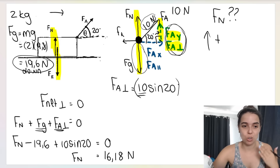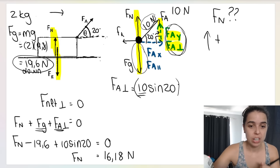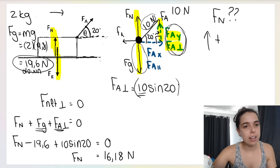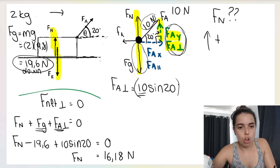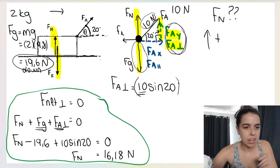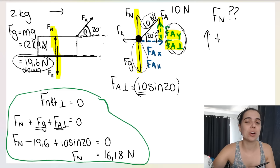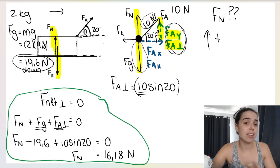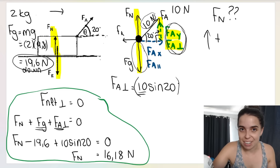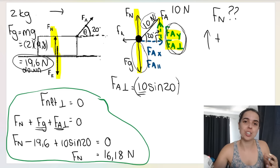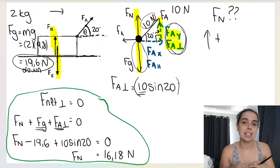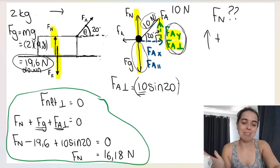What I'm showing in this scenario is that when there's another force acting at an angle, we break it into components. There's no longer just normal force and gravity acting in the Y direction — there's also a perpendicular component of the applied force that must be considered when finding the normal force. It's very important to consider everything, which is why it makes sense to learn this layout.